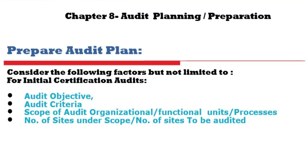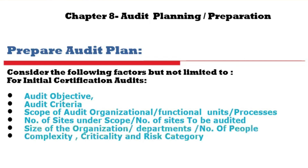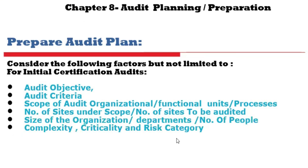Size of the organization, number of departments, number of people, and complexity are very important. Sometimes the processes are very complex — like a refinery, an oil gathering center, or a petroleum production center — very high risk, high critical jobs. Chemical industries and process industries need more attention and more time. Based on that, you decide the audit time.